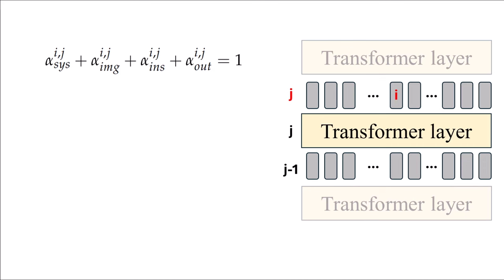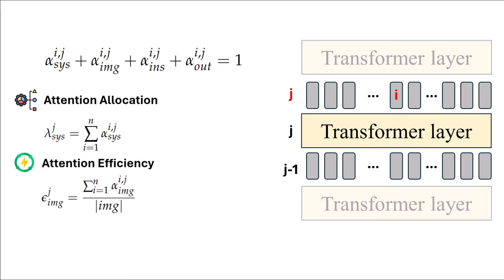Once we compute attention scores, we can compute something called attention allocation. For a specific layer J, the attention allocated to system prompt tokens, for example, is the sum of attention scores across all tokens in that layer — meaning how much we attend to system prompt tokens in previous layers to construct all tokens at layer J. Attention efficiency then normalizes this by dividing by the number of tokens in that category. For image tokens, the numerator is attention allocation and the denominator is the number of image tokens.